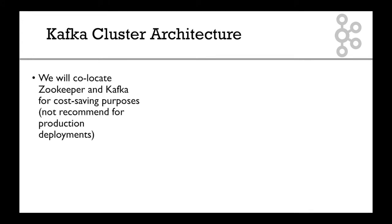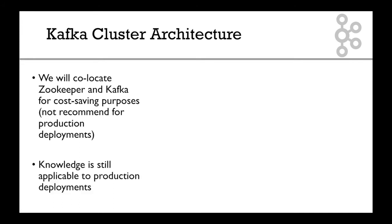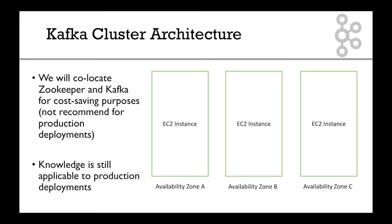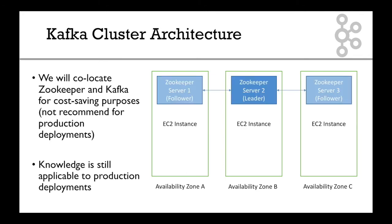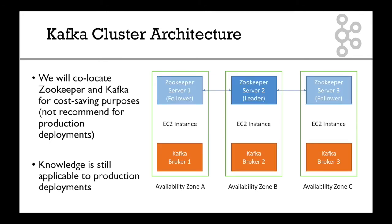For the Kafka cluster setup, we'll basically co-locate Kafka and ZooKeeper on the same machines in this course to save a bit of money. But that's not the recommended way for production deployments — all the knowledge we gain here is still applicable to production. We're going to have three availability zones and three EC2 instances, and they're going to run ZooKeeper and Kafka. It's called co-location because ZooKeeper and Kafka run on the same EC2 instance, but you could very well run them on different servers, which is the recommended way for production deployments. The Kafka brokers will still be connected to any ZooKeeper server on any machine, so it works really well.